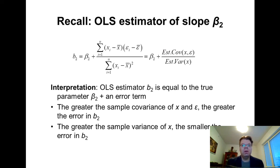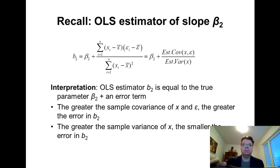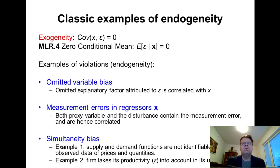By the endogeneity problem we mean that the population covariance of x and epsilon is not equal to zero. There would then be some systematic bias, which would also make the estimator inconsistent and cause statistical inferences to fail. The easiest way to understand the exogeneity assumption is to define it as the assumption that the covariance of x and epsilon equals zero.